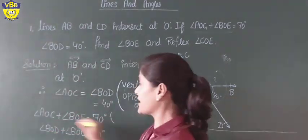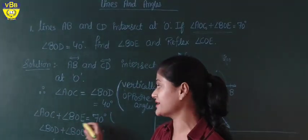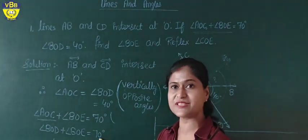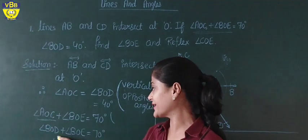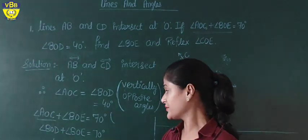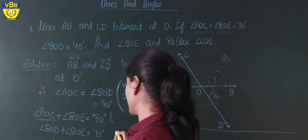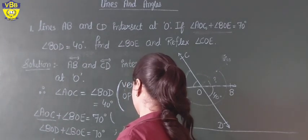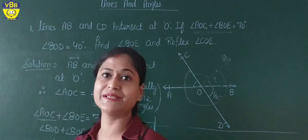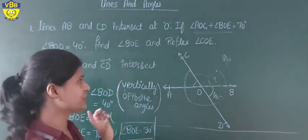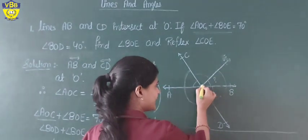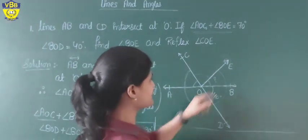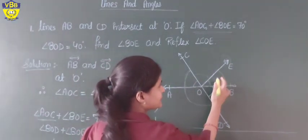The given condition is AOC plus BOE is equal to 70 degrees. So in place of AOC, we can write BOD plus BOE equals 70 degrees, or placing the value: 40 plus BOE equals 70 degrees. So BOE is equal to 30 degrees.